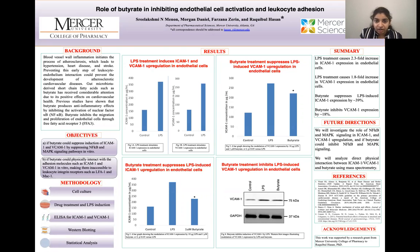We can summarize our data by saying that LPS treatment induced ICAM-1 and VCAM-1 upregulation in endothelial cells. Also, when the LPS-induced cells were treated with butyrate, there was suppression in ICAM-1 and VCAM-1 upregulation. Our future studies would aim to investigate the role of NF-κB and MAP kinase signaling pathways in ICAM-1 and VCAM-1 upregulation, and if butyrate could inhibit NF-κB and MAP kinase signaling pathways. We will also analyze the direct physical interaction between ICAM-1 and VCAM-1 with butyrate using mass spectrometry.